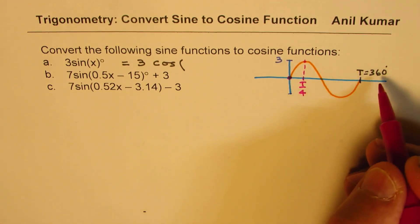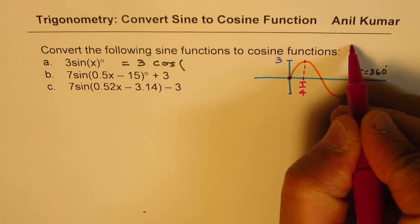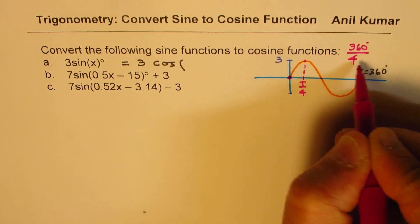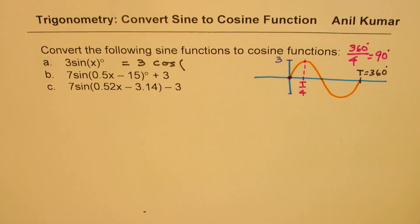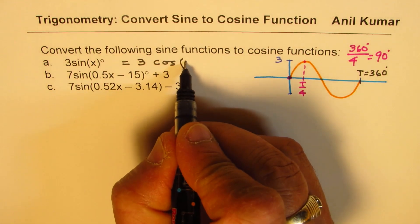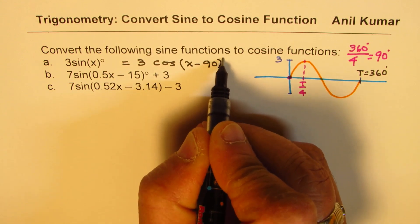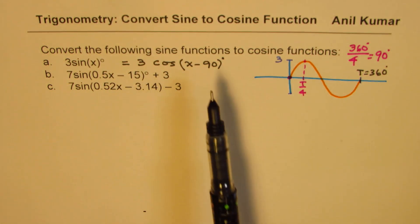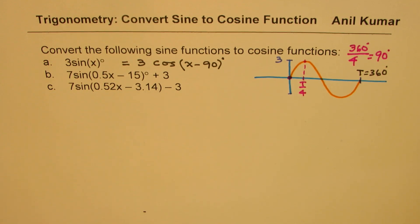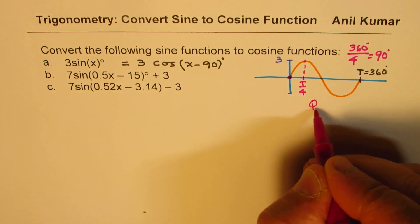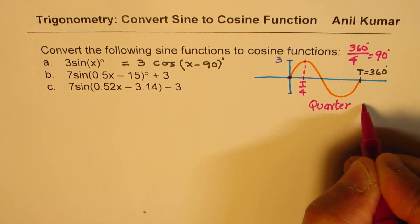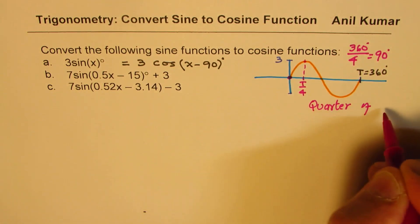In our case, T/4 happens to be: 360 degrees divided by 4 is 90 degrees. So it moves 90 degrees to the right. That means I should write x minus 90 degrees. The number 90 is representing a quarter of the cycle — or you can say quarter of the time period.